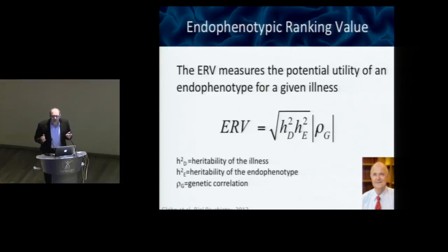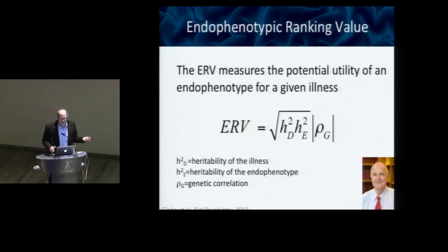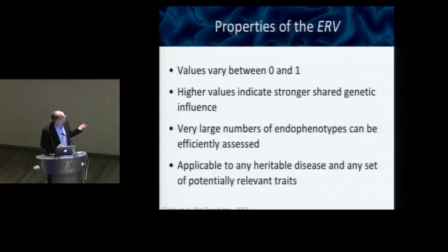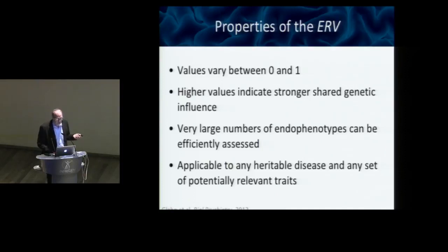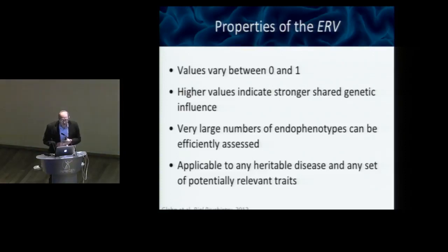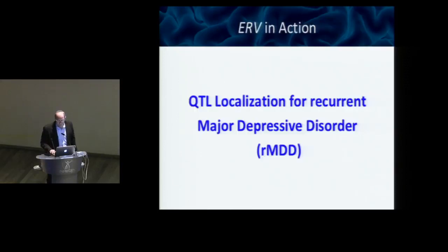This approach is completely agnostic — it works for any heritable illness and any set of endophenotypes. Like any covariance structure, it goes between 0 and 1, where higher values indicate stronger shared genetic influence. Very large numbers of endophenotypes can be assessed efficiently, and it's applicable to all heritable diseases.